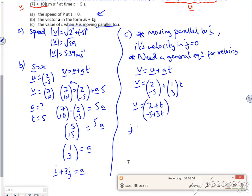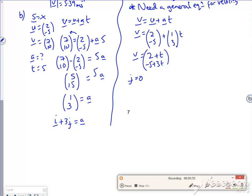So if I set the j component equal to 0, because it's not going up or down, I've got minus 5 plus 3t equals 0. Take the 5 over and divide by 3. So that gives me a time of 5 over 3 seconds.